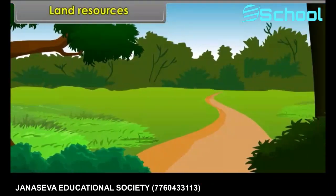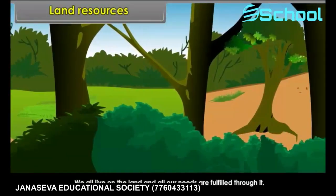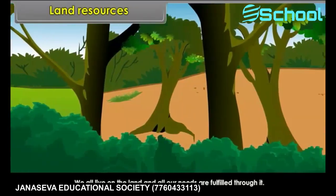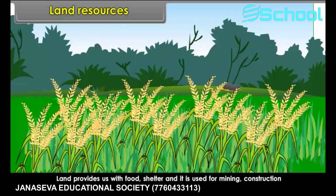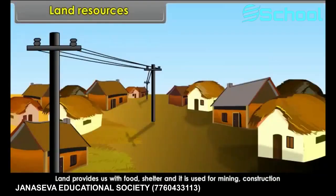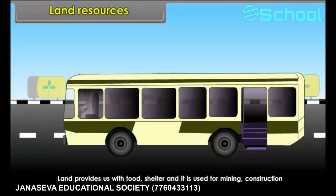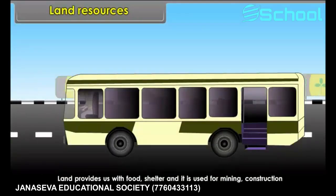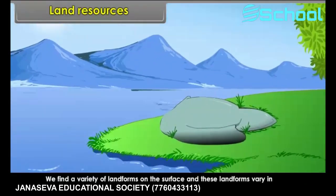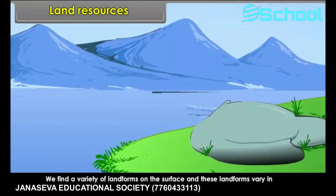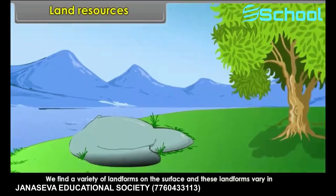Land resources. We all live on the land and all our needs are fulfilled through it. Land provides us with food, shelter, and it is used for mining, construction of roads, railways, etc. We find a variety of landforms on the surface and these landforms vary in shape and size.